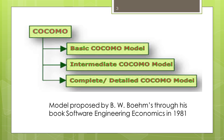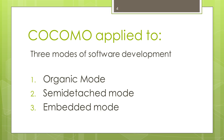All three models work on three modes of software development: organic mode, semi-detached mode, and embedded mode. Boehm postulated that any software development project can be classified into one of these three categories based on the development complexity. To classify a product, Boehm considered not only the characteristics of the product but also those of the development team and development environment. Roughly speaking, these three product classes correspond to application, utility, and system programs respectively.